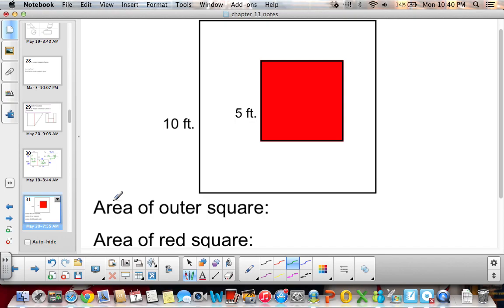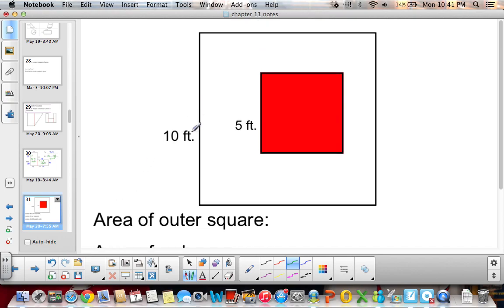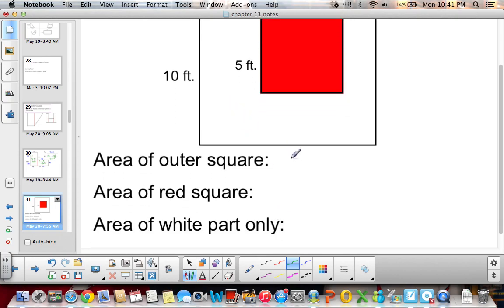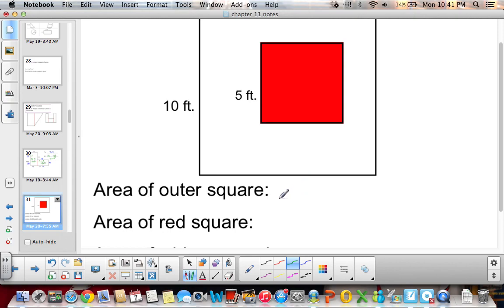Okay, so the area of the outer square, this is a square. Just because we're told only one side, we know that all the other sides are 10 feet. So the outer square, if we're trying to find the area of the white part only, that's what we're trying to do right now. I would take the area of the outer square, which is 10 times 10, and I get 100.